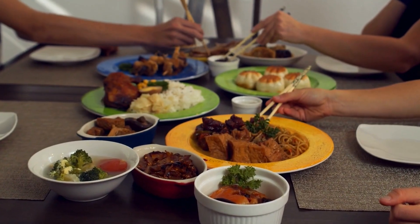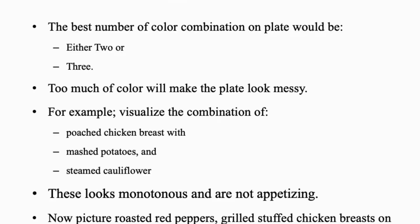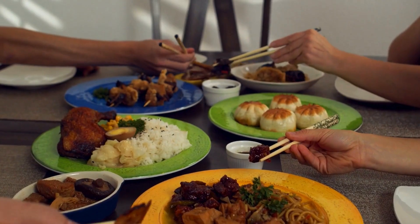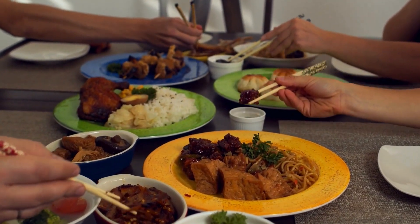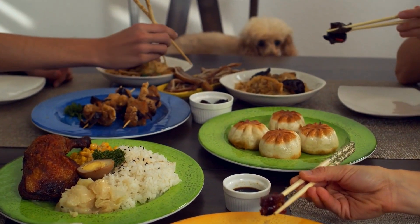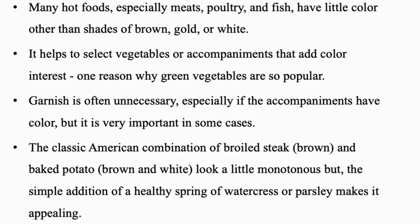This combination looks monotonous and not appetizing. Now picture roasted red peppers, grilled chicken on a bed of herbs and a sprinkle of green pesto sauce — it definitely looks appetizing. Many hot foods, especially meats and certain fish, have little color other than shades of brown, gold, and white. It helps to select vegetables or accompaniments that add color interest.